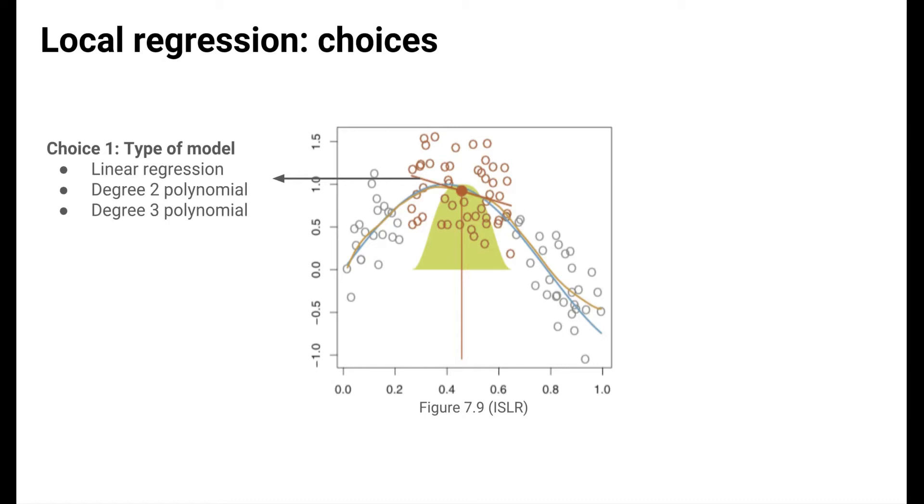There are a number of choices that arise in local regression to tailor the smooth function that's estimated. The first choice is the type of model to use for the local trends. Using ordinary linear regression, in other words a degree one polynomial, is quite common. Degree two and three polynomials are also considered, which correspond to local quadratic and local cubic regression.